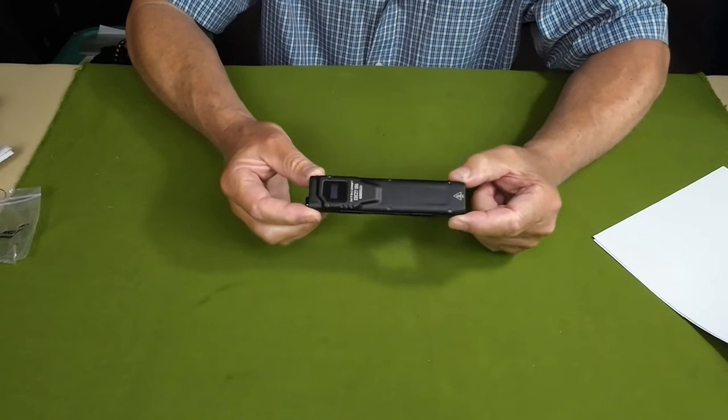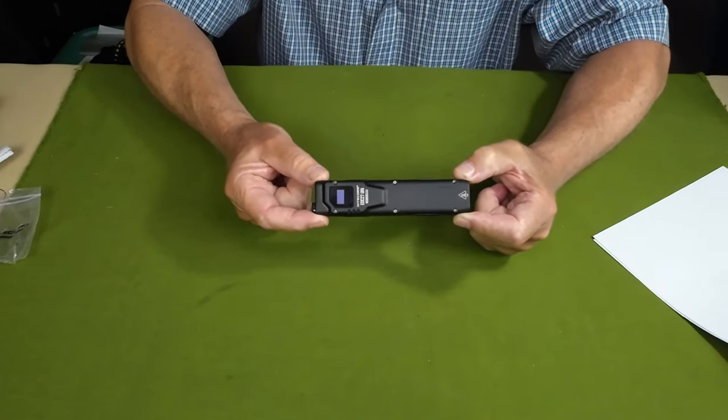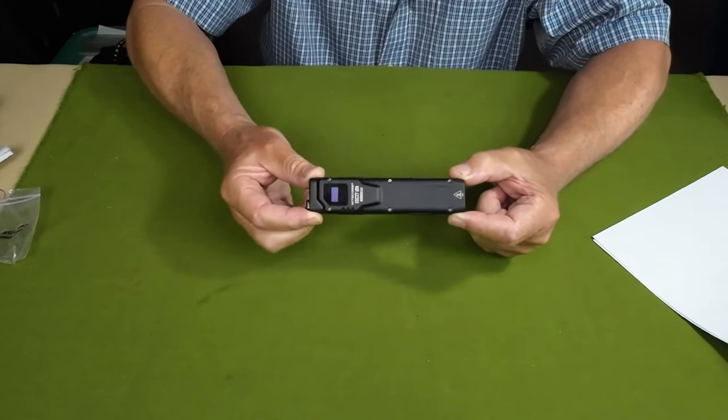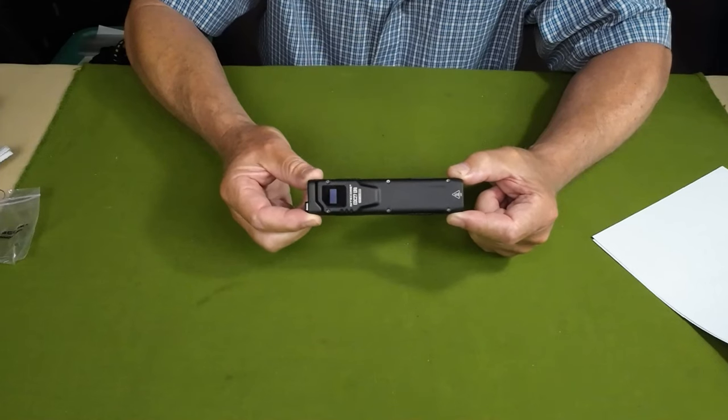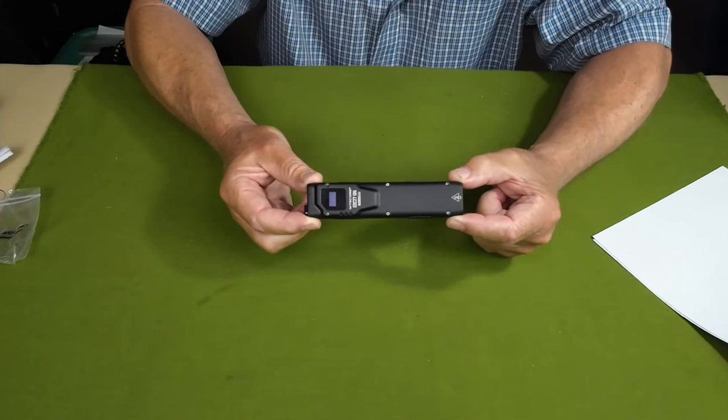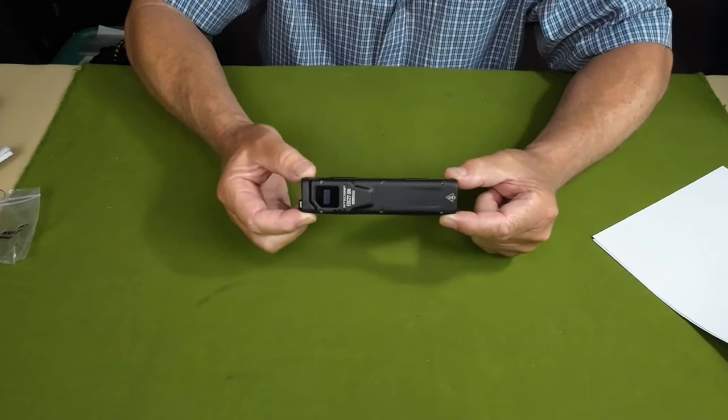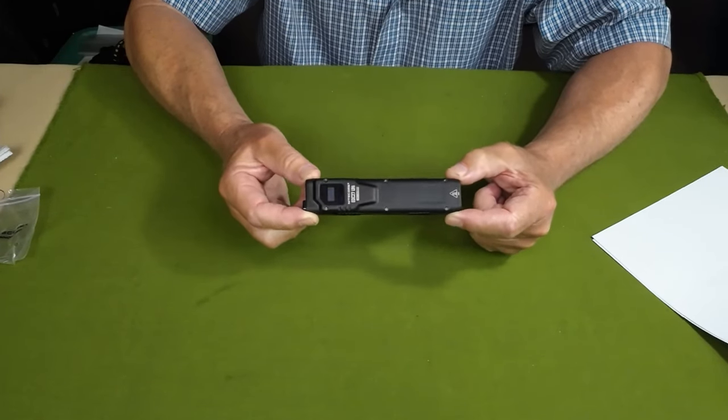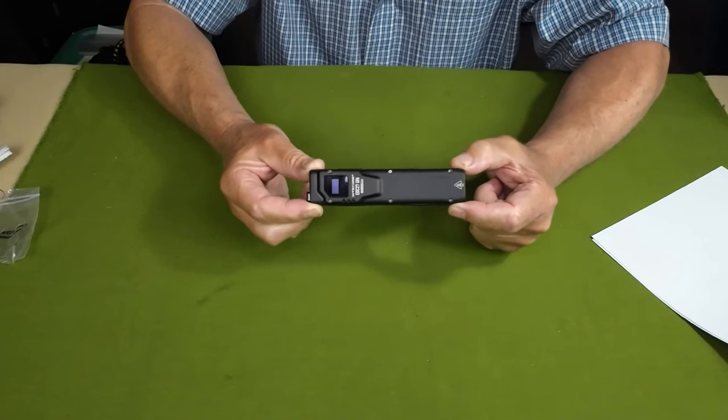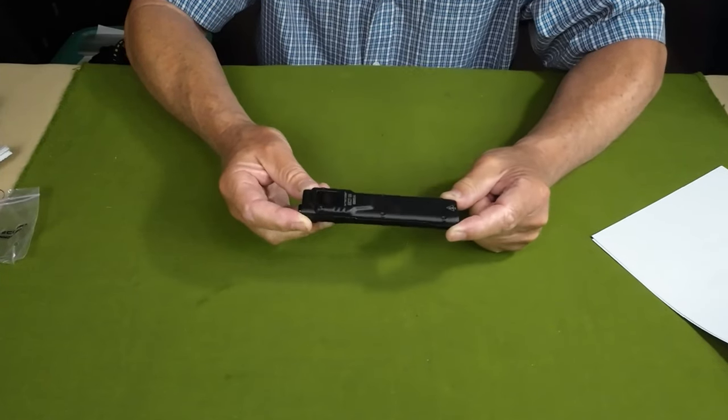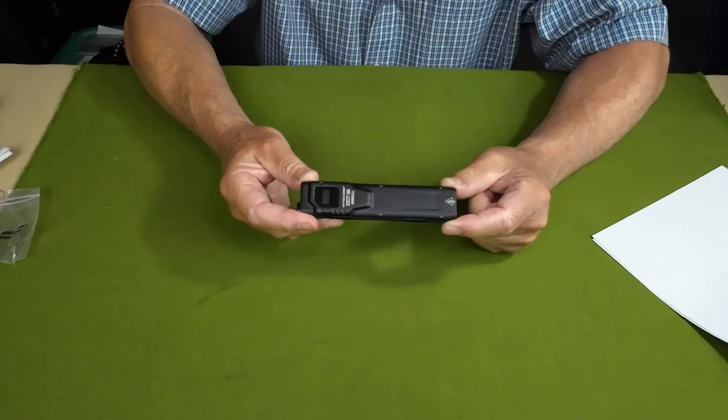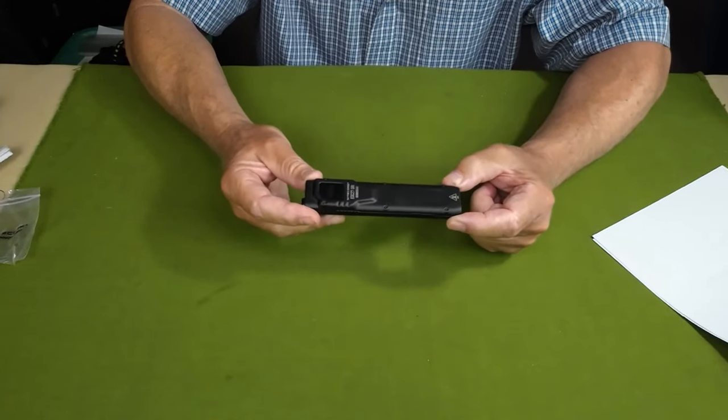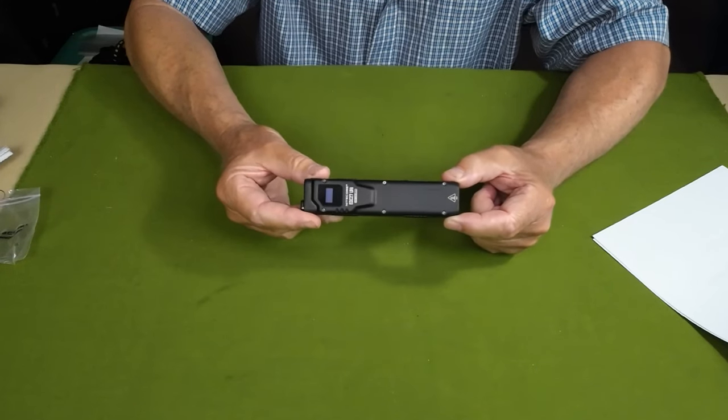1,100 lumens on high will run for one hour, 35 minutes. It has a medium setting of 200 lumens running for four hours, 20 minutes, a low setting of 65 lumens running for 14 hours, and an ultra low of 15 lumens running for 55 hours.